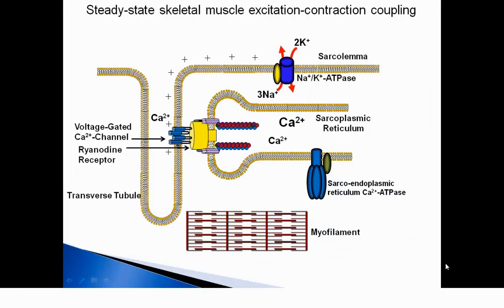Muscle contraction is the result of a change in cell membrane potential which propagates across the sarcolemma and down into the T-tubules. Here it triggers calcium release from the sarcoplasmic reticulum and into the cytosol.